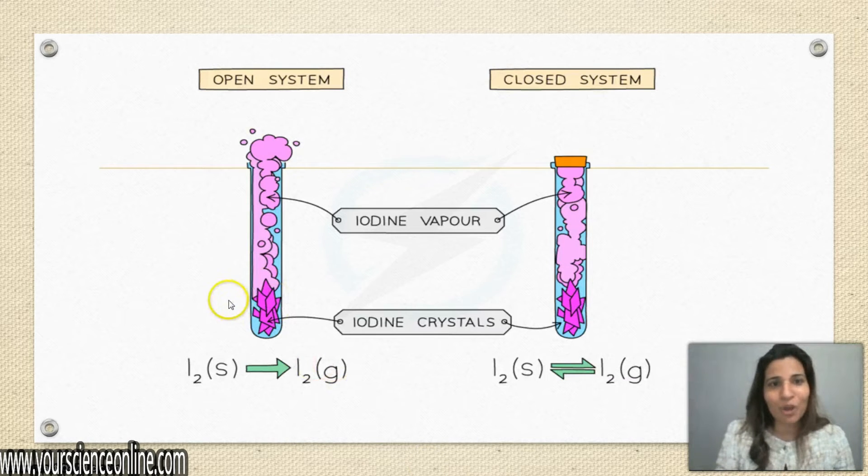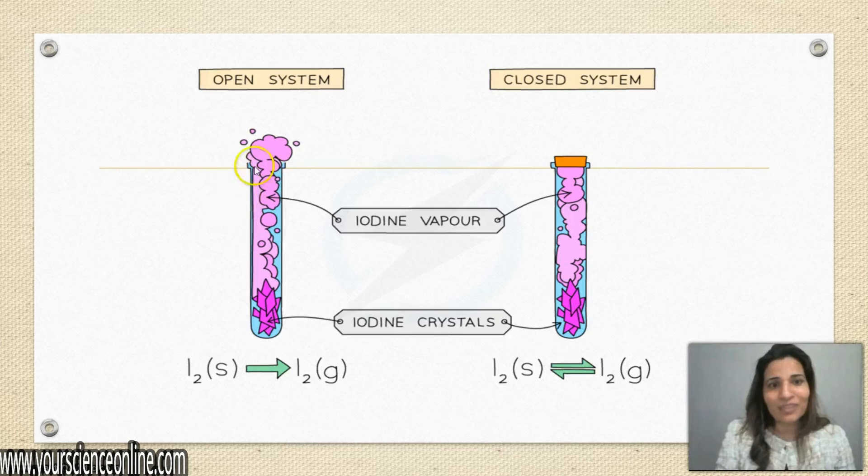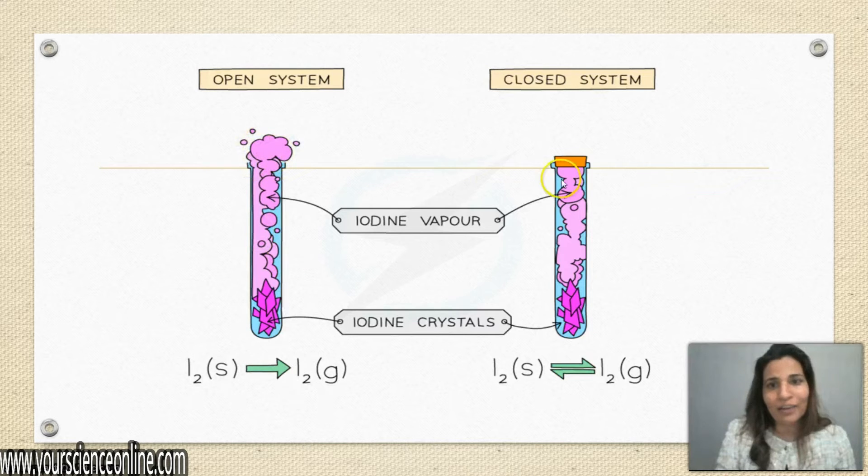Here we have an example of an open system. As you can see, these vapors can escape since there is no barrier. While here, since there is a barrier, this is a closed system.